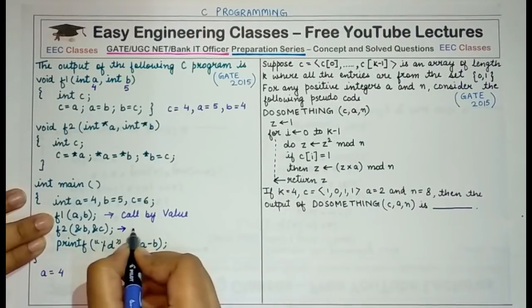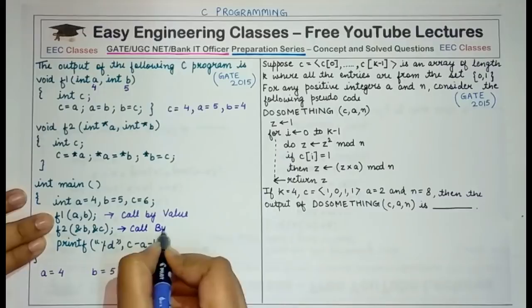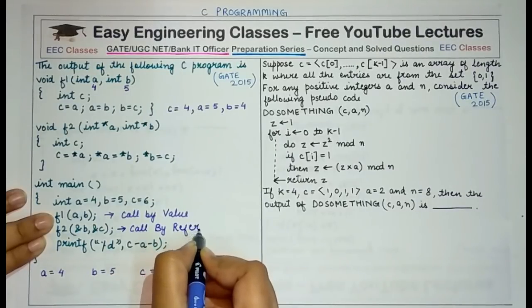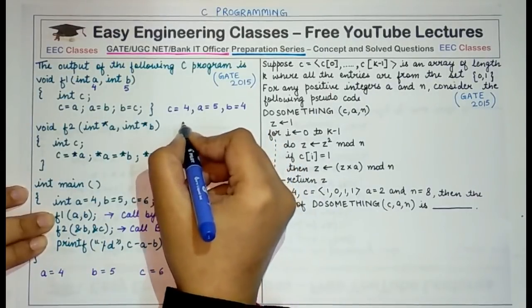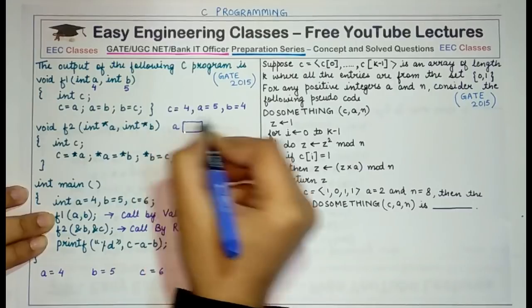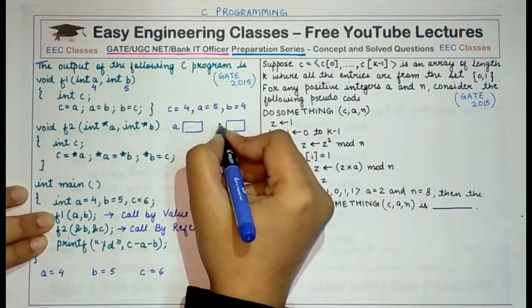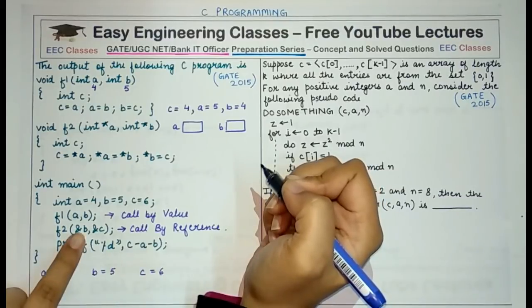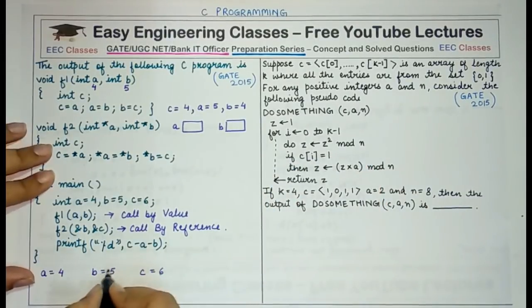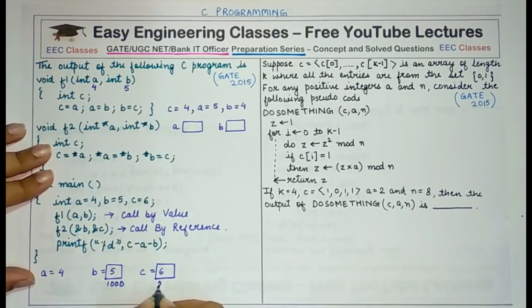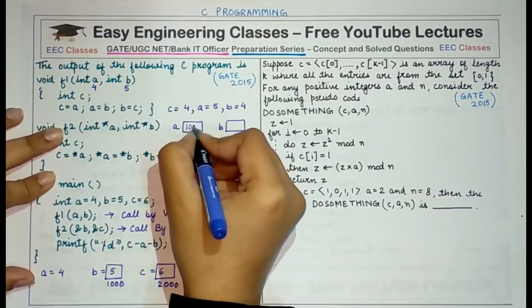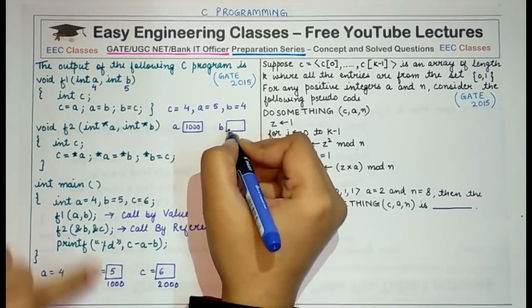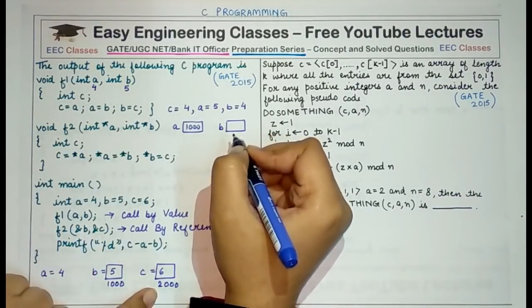Now the second call to f2 is call by reference — the addresses of variables b and c are passed. Suppose the initial address of b was 1000 and the address of c was 2000. So in f2, the parameter a would be assigned the address of b which is 1000, and the parameter b would be assigned the address of c which is 2000.